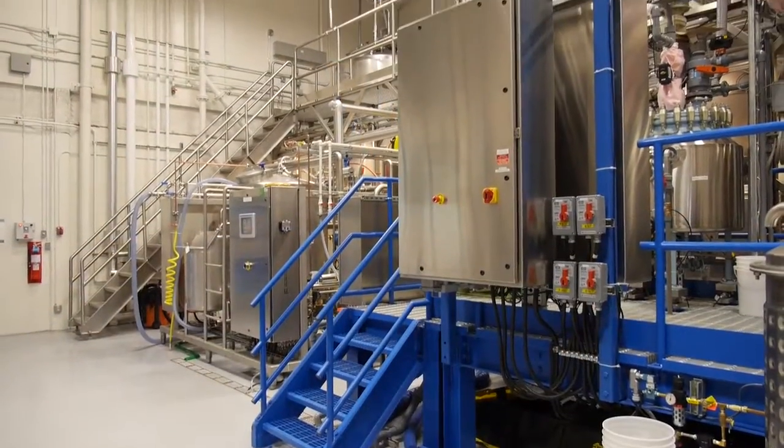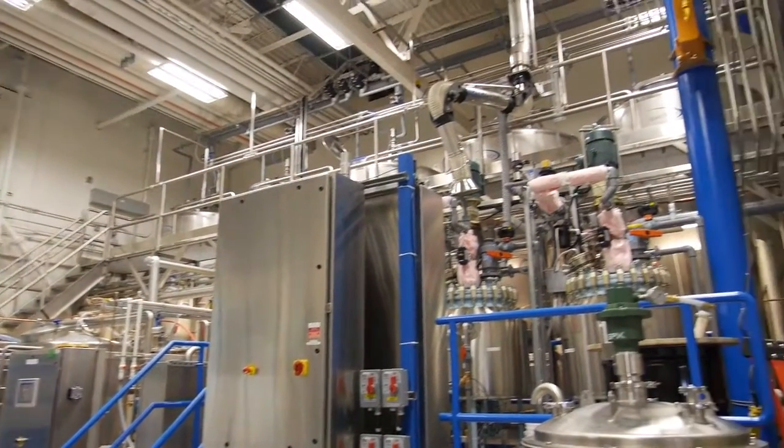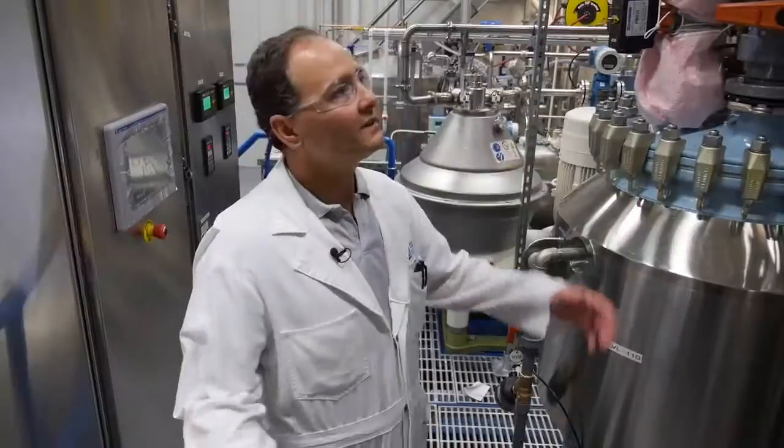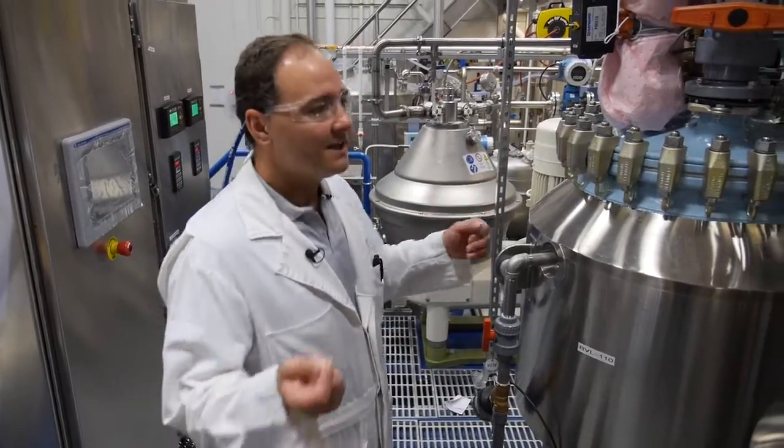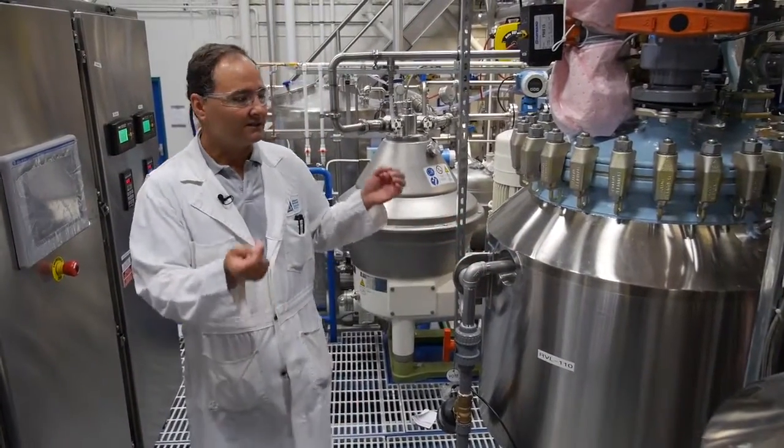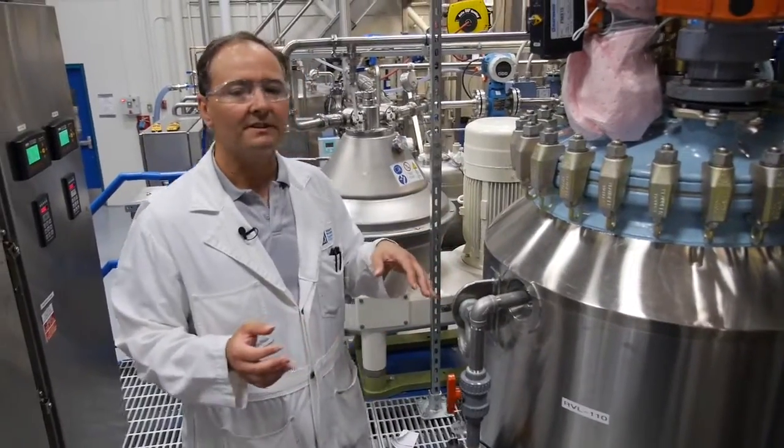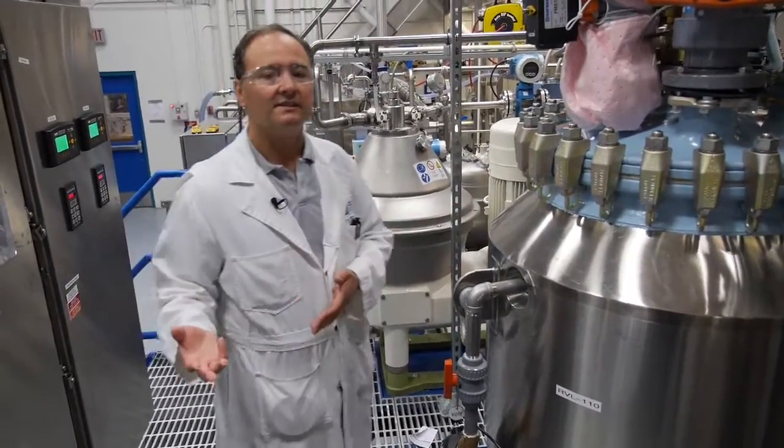What we're doing is we're taking market pulp and reacting it with chemicals to produce these cellulose-based nanocrystals. We are in our CNC pilot plant. This you're looking at here is our reactors, 200 liter glass line that we add our material and convert it from cellulose into CNC.